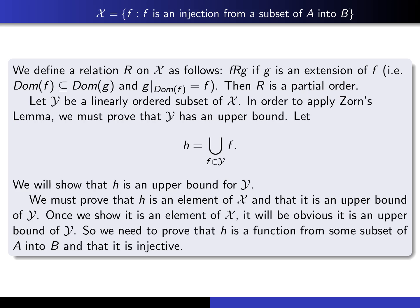Now we want to apply Zorn's Lemma to the collection X to obtain a maximal element. We give ourselves Y, a linearly ordered subset of X — meaning for any pair of functions F and G in Y, either F is related to G or G is related to F. To apply Zorn's Lemma, we have to prove Y has an upper bound. We define H to be the union of all functions F that are elements of Y, and the claim is that H is an upper bound for Y.